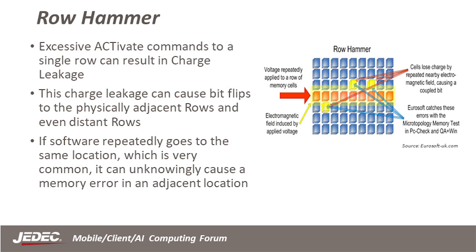Switching gears from protocol violations, we'll talk about a significant issue called row hammer. Row hammer is a memory-related issue in LP5 and other DRAM technologies where repeated accessing of a particular memory row causes disturbances in adjacent rows, leading to bit flips or data corruption. The memory controller repeatedly activates and deactivates memory rows in quick succession, causing electrical interference. It was once believed only immediately adjacent locations were affected, but it has been recently discovered that the hammering effect has a blast radius — locations several physical rows away can also experience bit flips.